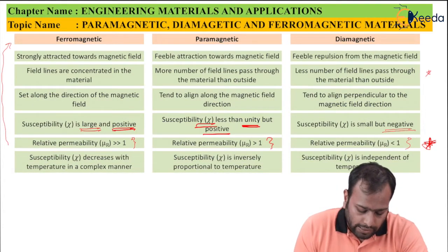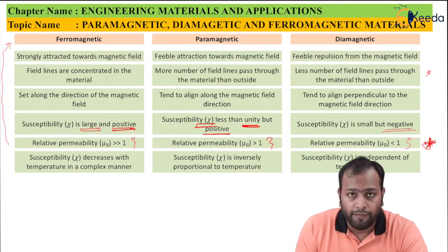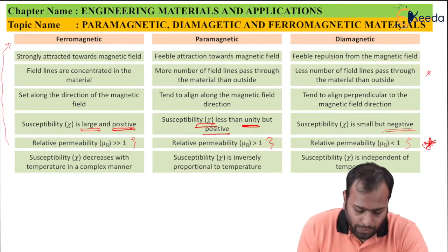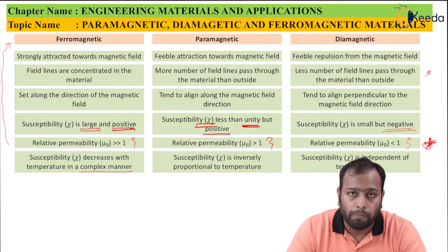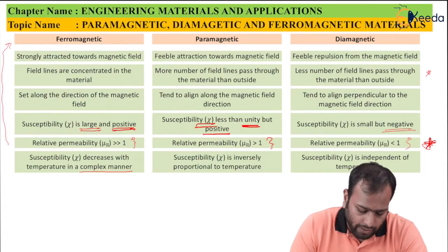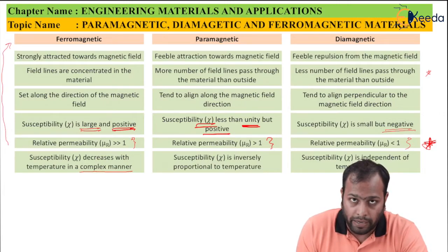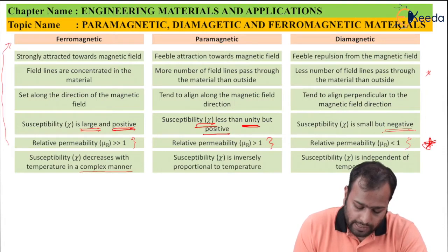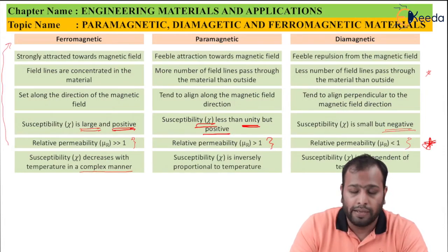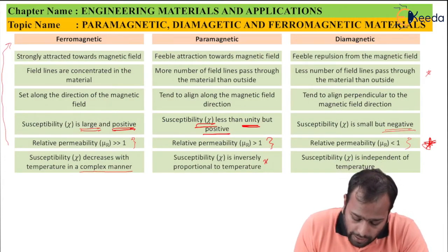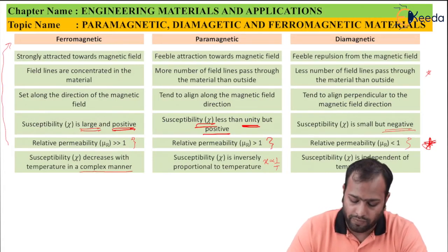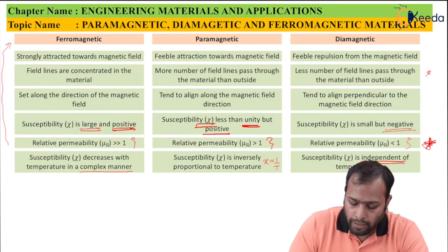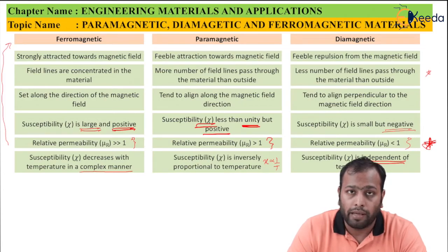Next point: in ferromagnetic, susceptibility decreases with temperature in a complex manner that cannot be quantified. In paramagnetic, susceptibility is inversely proportional to temperature, which is Curie's law. In diamagnetic, susceptibility is independent of temperature — it has no dependence on temperature at all.